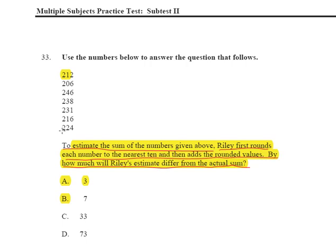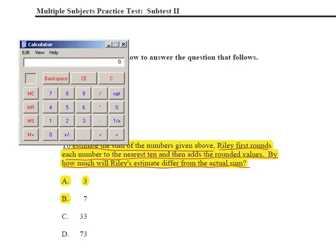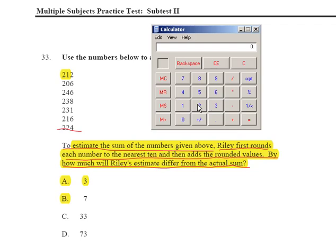All right, well, let's do the easy part first. Let's not do any rounding. We've got to just simply add 212 all the way down to 224, so let's go ahead and do the boring thing together. Hopefully by now you've figured out that maybe you want to find your four-function calculator to do this. And we're going to add 212 plus 206 plus 246 plus 238 plus 231 plus 216 plus 224.